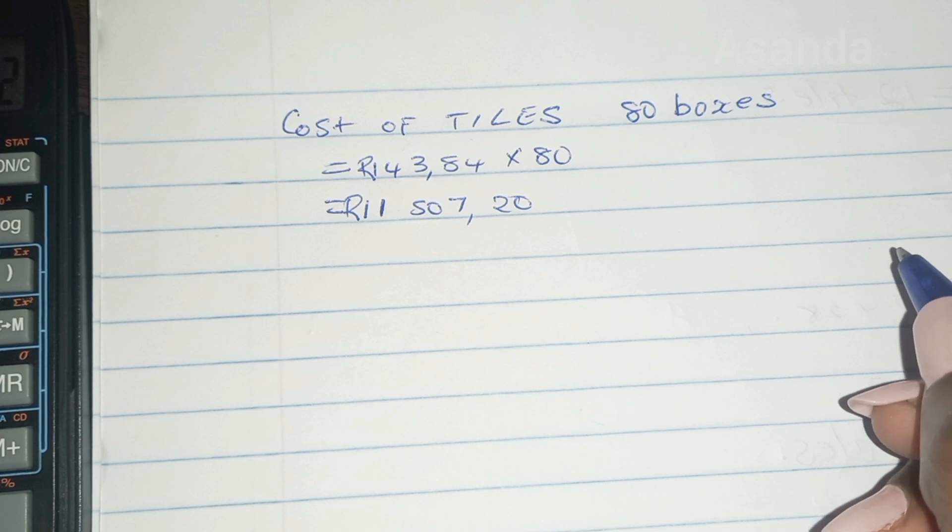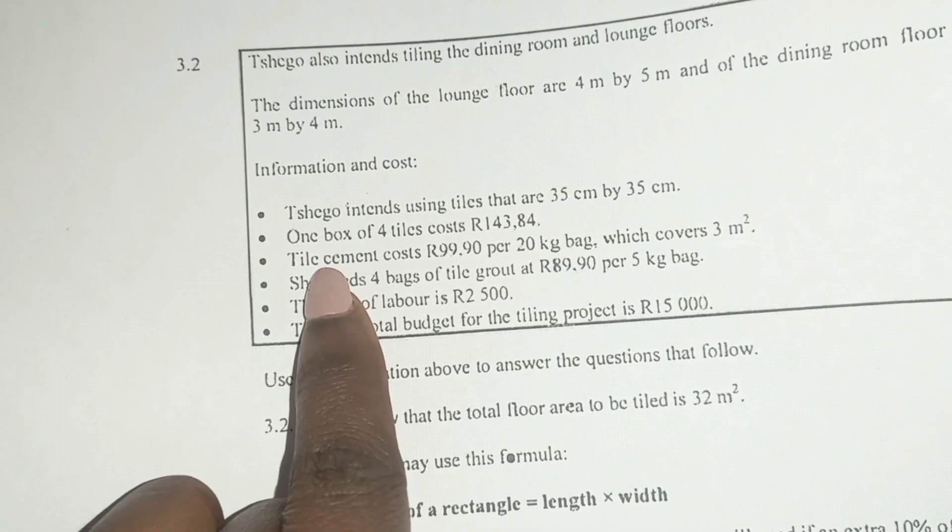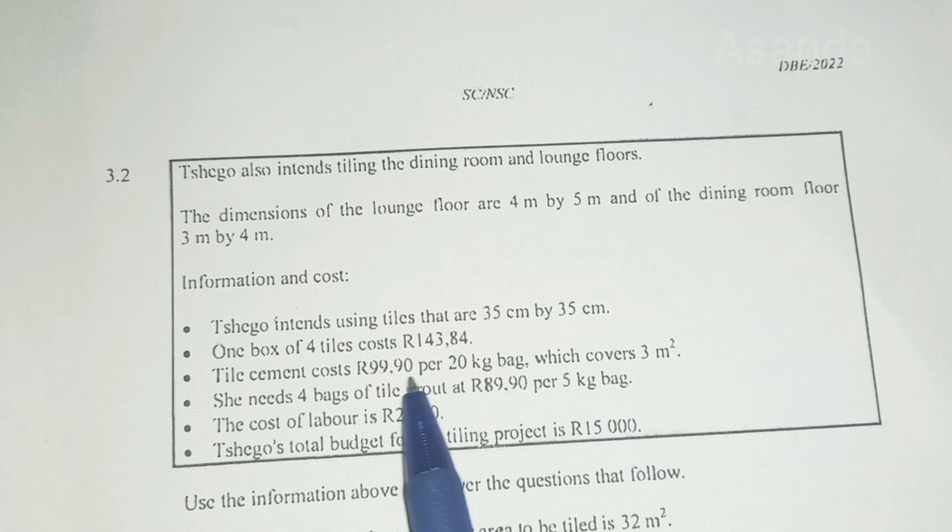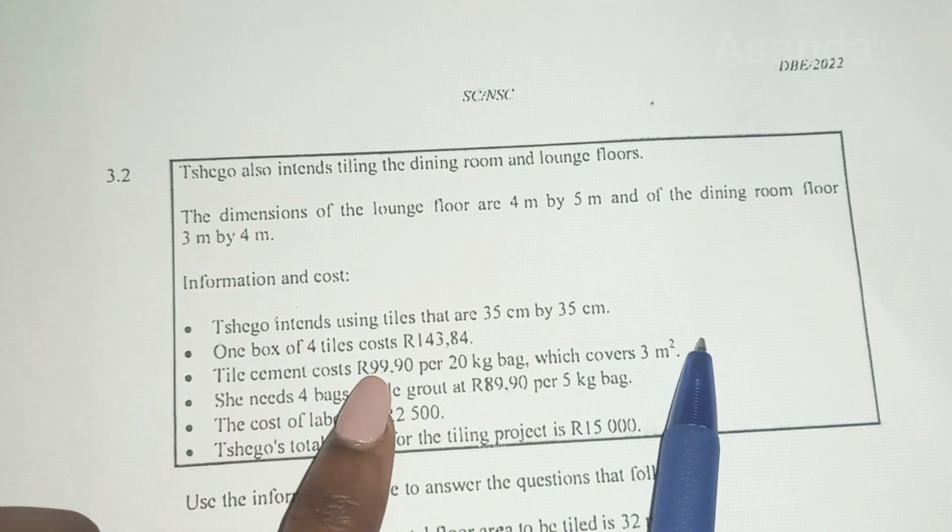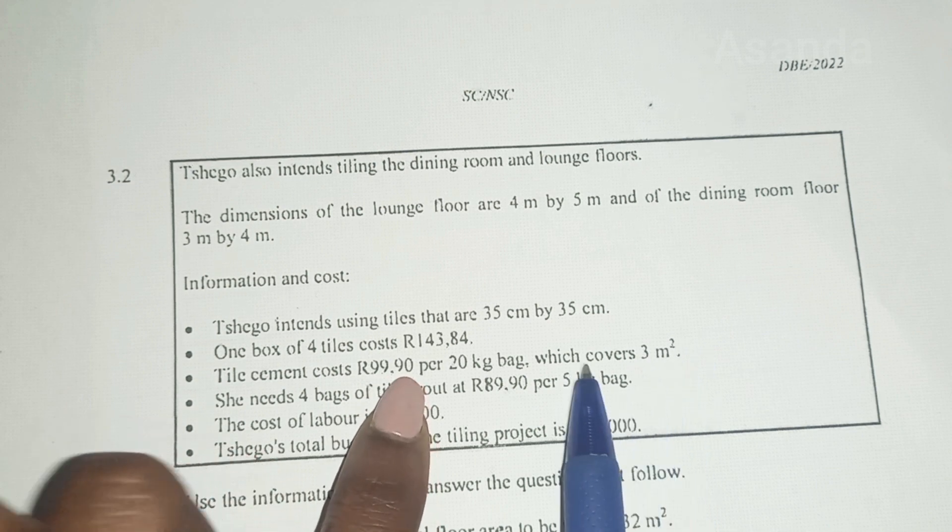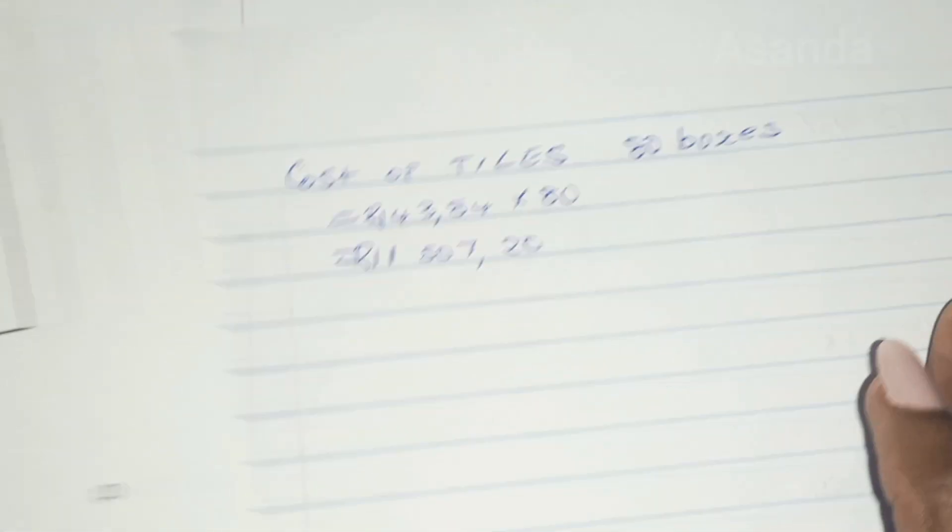Next step. So we've bought the box of tiles. Then we have the cement. Let's go get the cement. So the cement says that a 20 kilogram bag covers three meters squared, and that bag costs 99 rand and 90 cents. So three meters squared, we need to find out how many bags first. So we need to know how many bags.